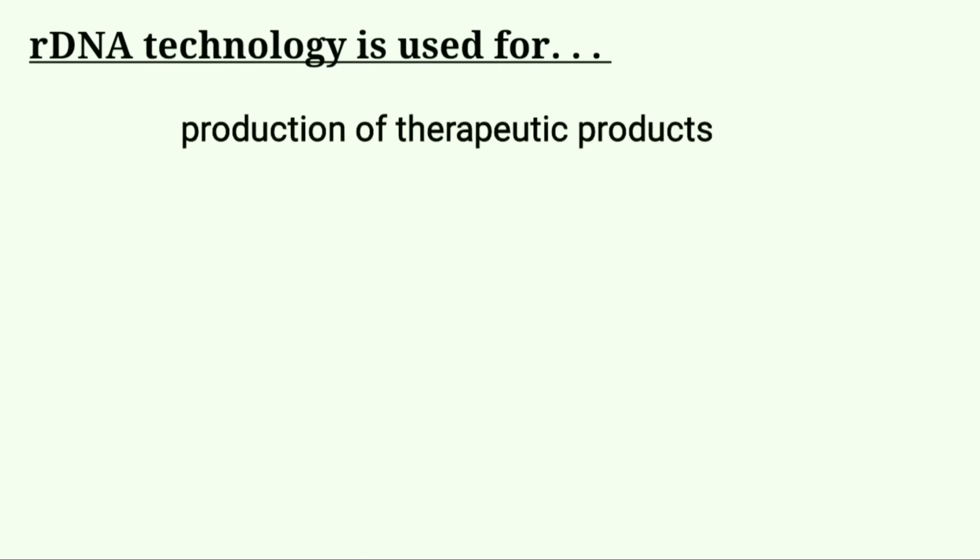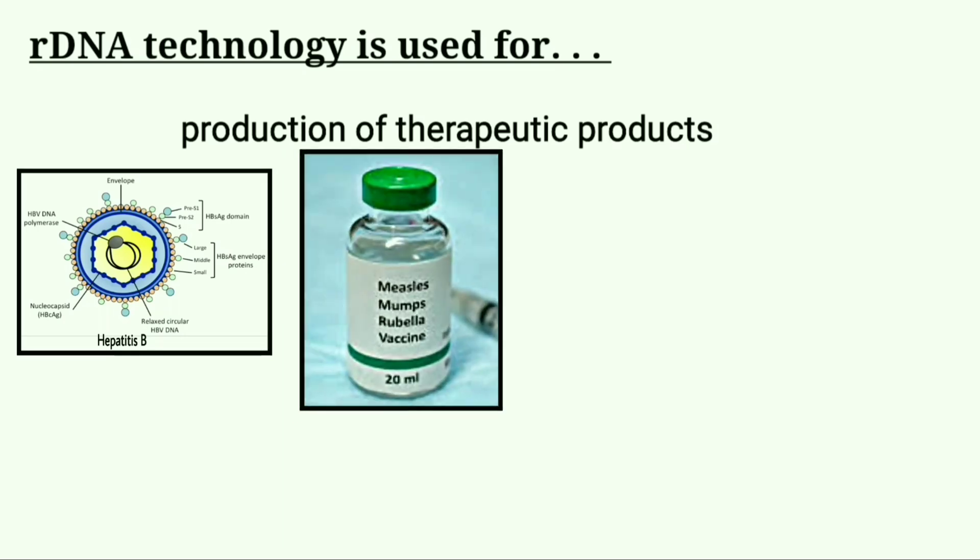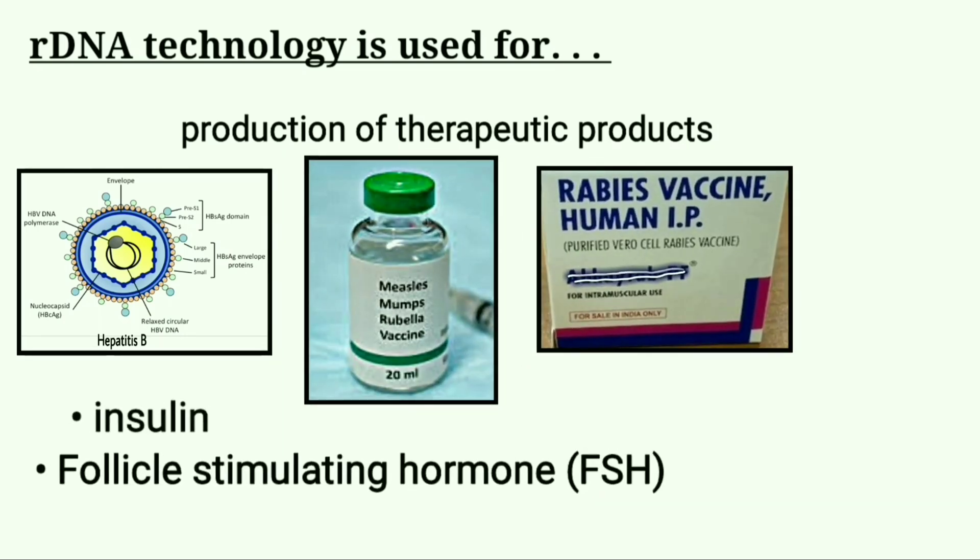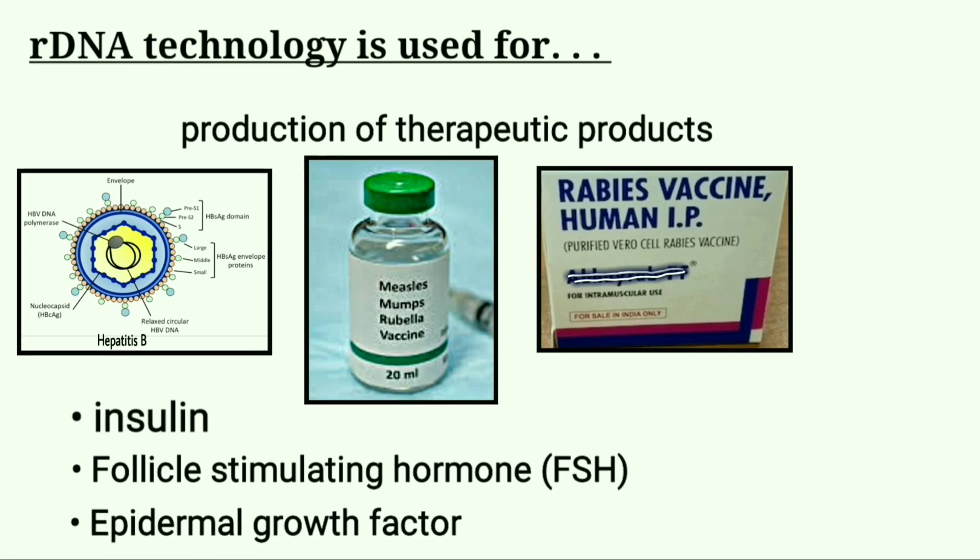The therapeutic products made by recombinant DNA technique are vaccines like hepatitis B, measles, rabies, human hormones like insulin, follicle stimulating hormones, epidermal growth factor.